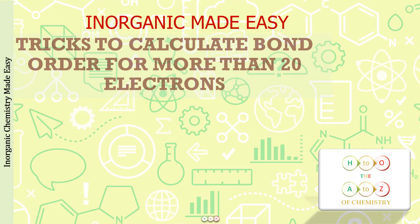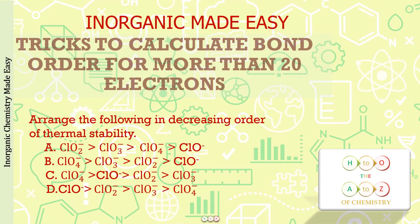Now why is bond order for more than 20 electrons important? Let me give you an example. We have a question: arrange the following in decreasing order of thermal stability — ClO₂⁻, ClO₃⁻, ClO₄⁻, and ClO⁻. These are the four anions which you have to arrange in decreasing order of thermal stability. I am going to answer this question with the help of bond order calculation, which is going to be very easy — even if you forget the concepts, bond order will give you the correct answer.